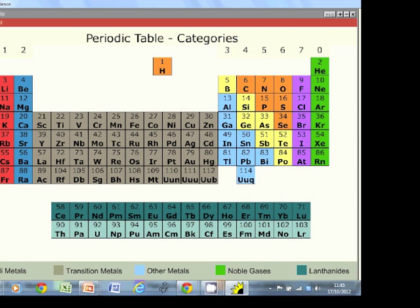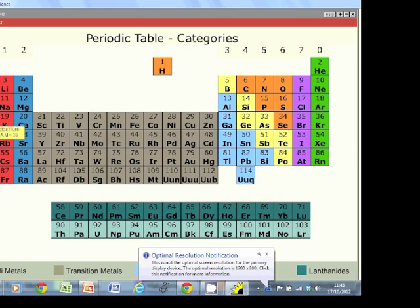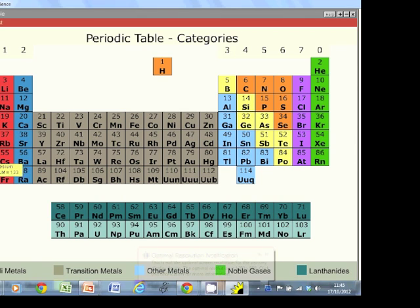A number of important groups you need to know about. Group 1 down here - lithium, sodium, potassium, rubidium, cesium, francium - that's an important group, that's called the alkali metals, and they've all got one electron in their outer shell. So they have similar patterns of reactivity, because they've got one electron in their outer shell.